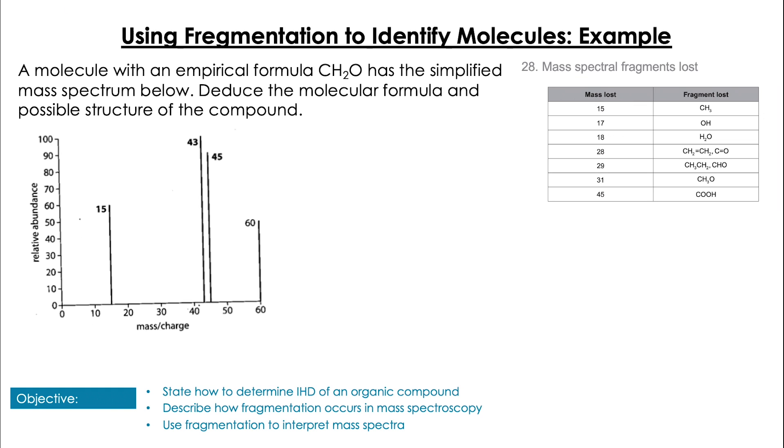Indeed, in your data booklet you have a table which tells you what the relevant fragment peaks might represent to help you construct a picture of these molecules. Let's take this example of this spectra, and using table 28 in your data booklet, it's given as the empirical formula CH₂O and a mass spectrum, and it says deduce the molecular formula and a possible structure.